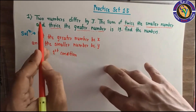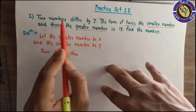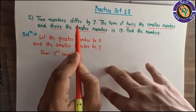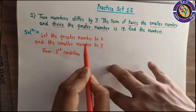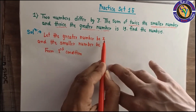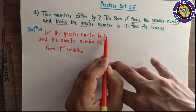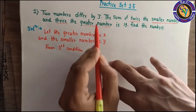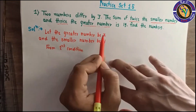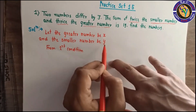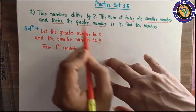What is the first condition? Two numbers differ by 3 — that means the difference of the two numbers is 3. If x is the greater number and y is the smaller number, then x minus y is equal to 3. We write x minus y here.